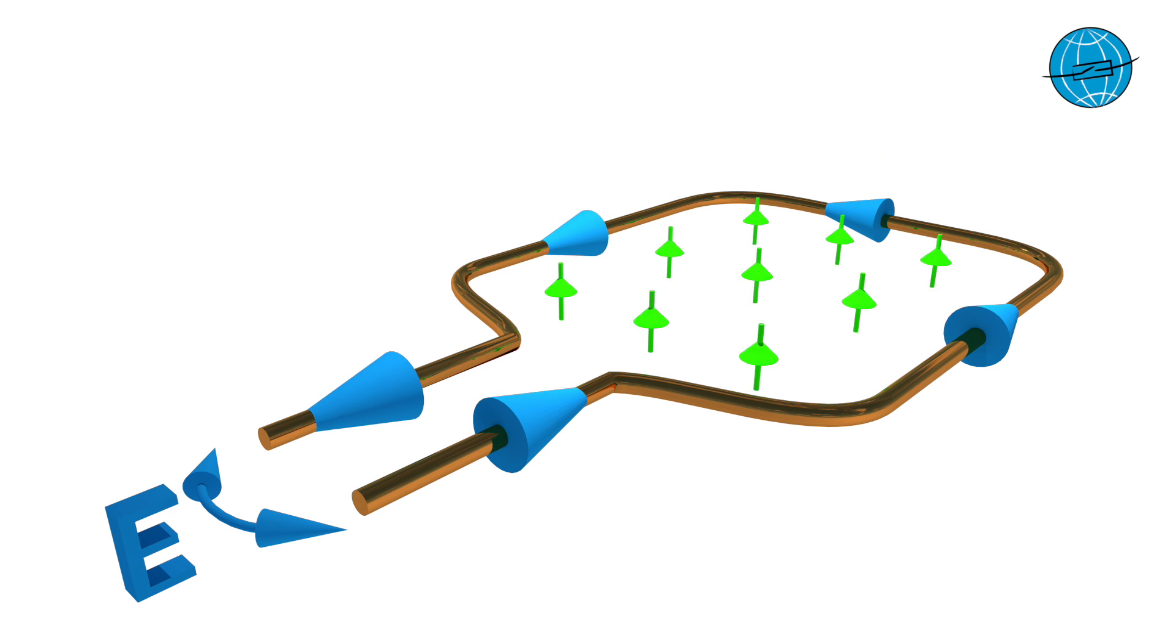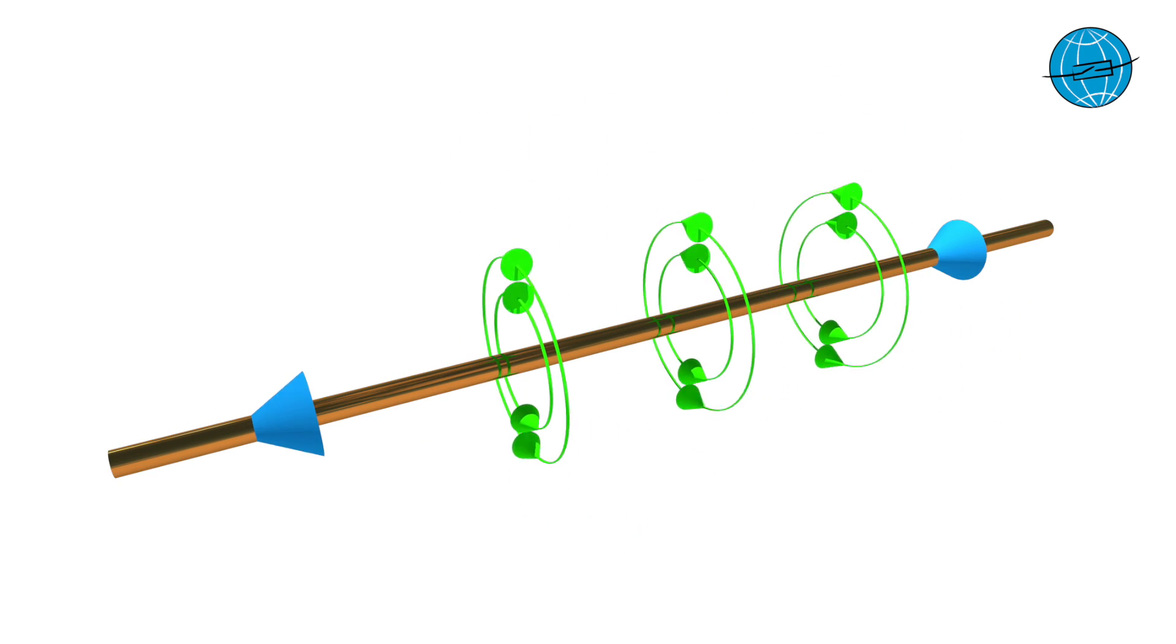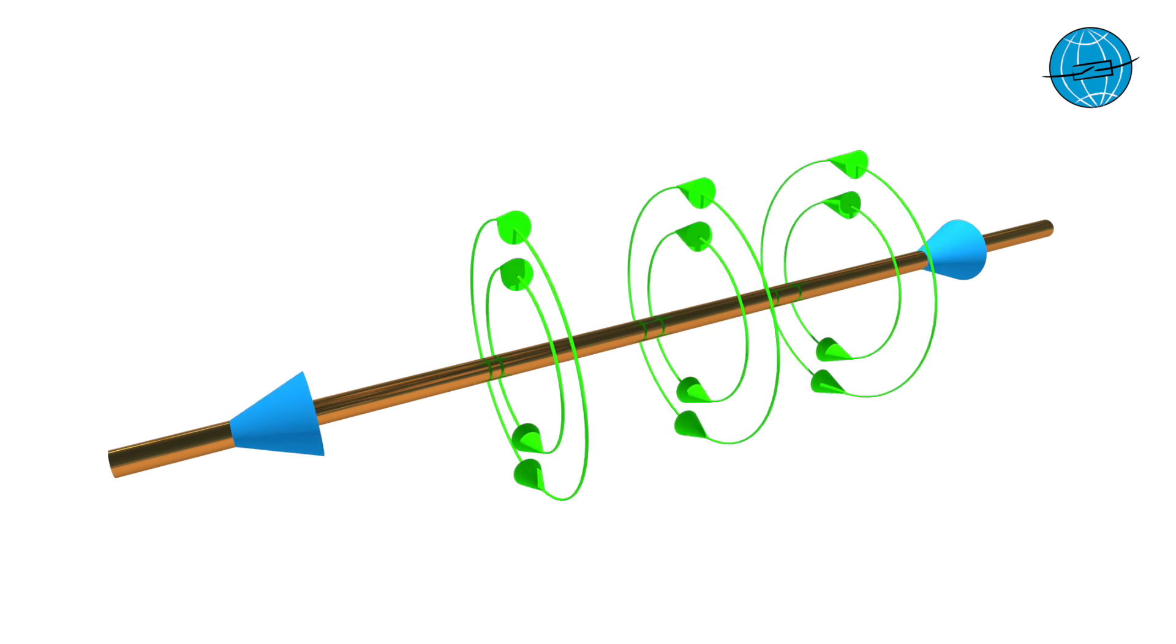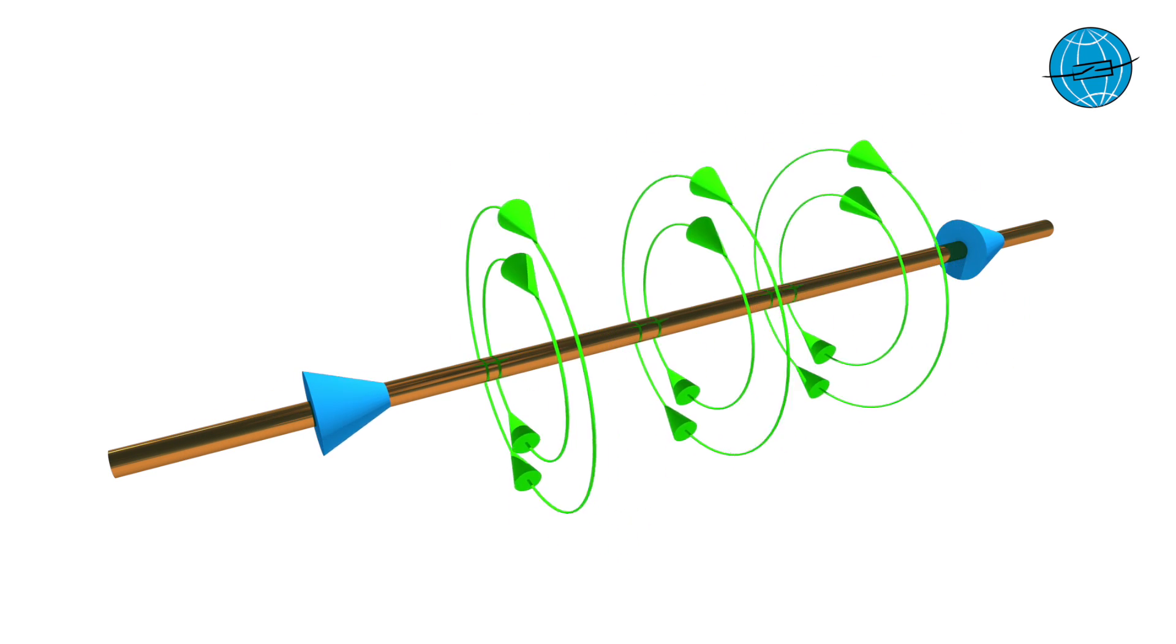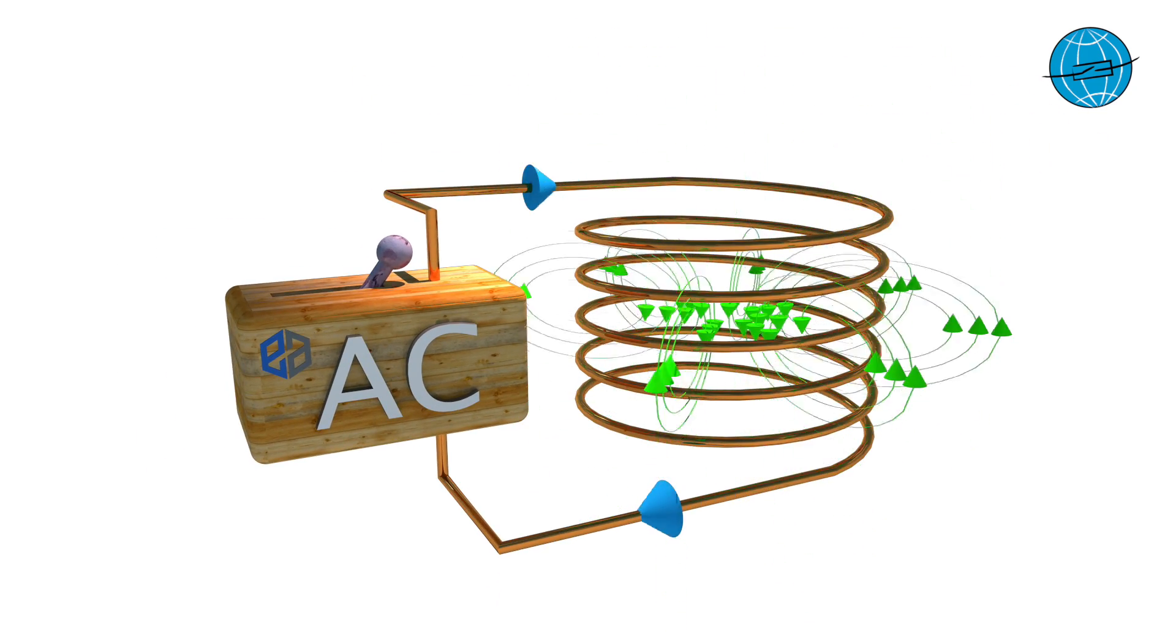Such a constantly changing alternating field can be easily generated using a coil by applying an AC voltage to the coil. The alternating current flowing through the conductor now generates a radial magnetic field along the conductor. The resulting magnetic field of a coil then looks like this. Due to the steady changing direction of the current, the magnetic field of the coil also changes its direction.